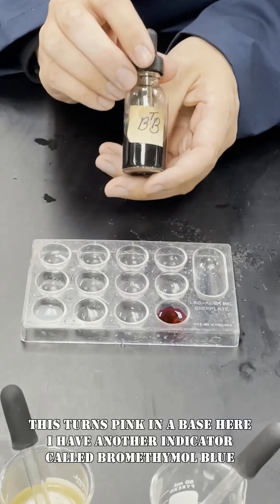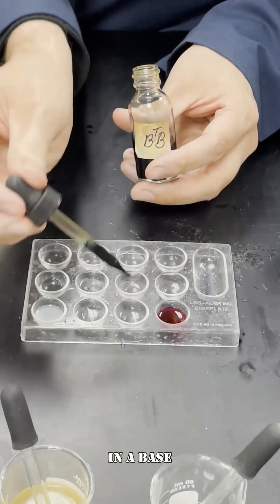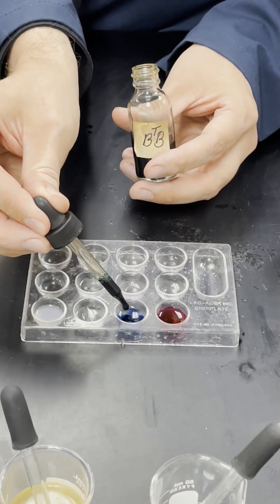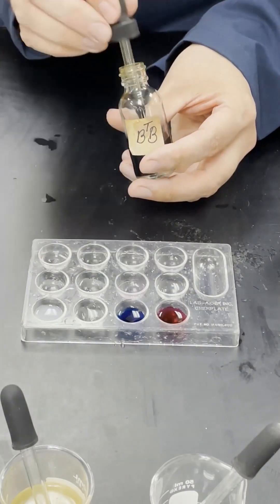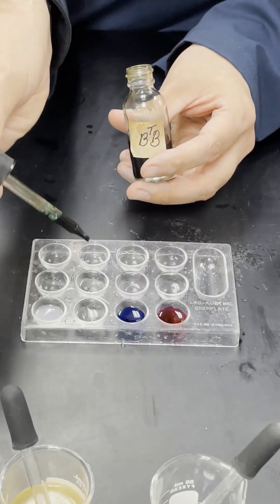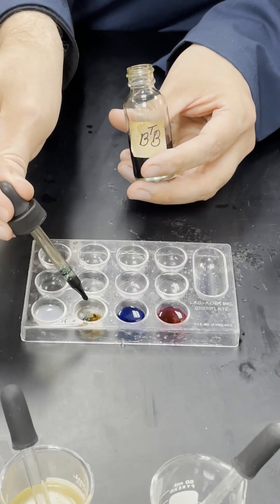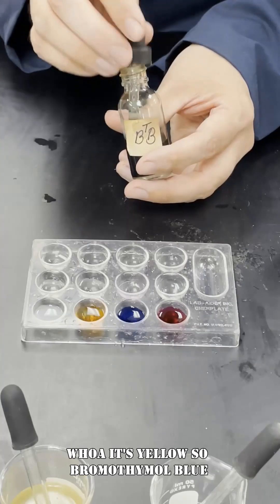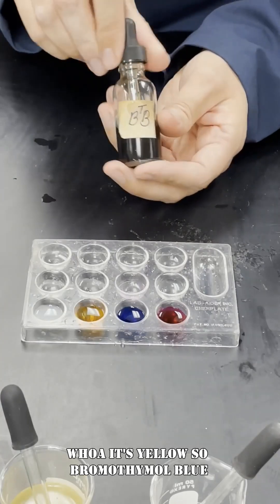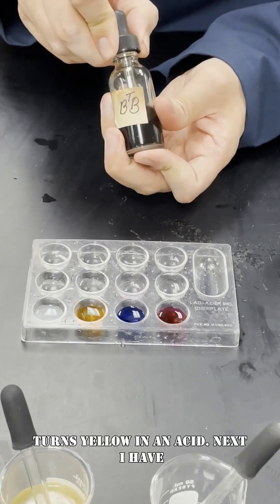Here I have another indicator called bromothymol blue. In a base, it's blue, and in an acid, whoa, it's yellow. So bromothymol blue turns yellow in an acid.